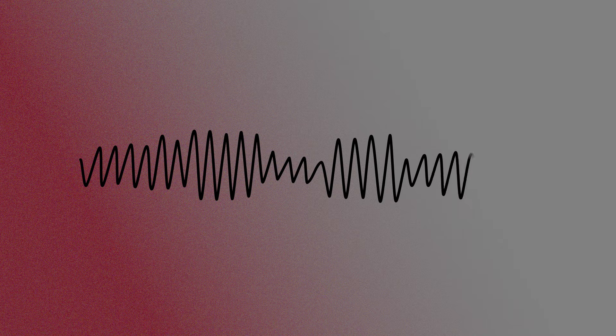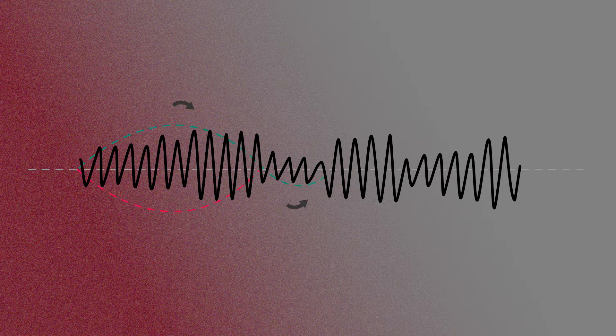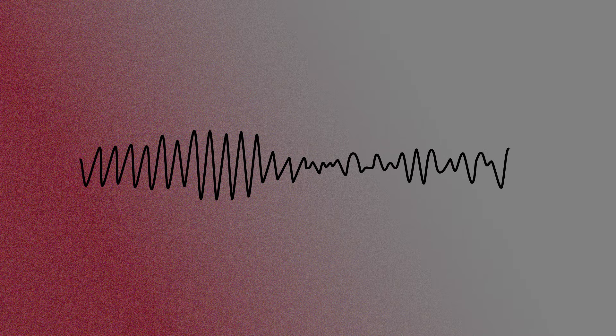Regardless of how this happens, the characteristic electrocardiographic finding you'll see is a ventricular dysrhythmia which appears to twist on an isoelectric line — hence the name torsade de pointe, or twisting of points. This can then evolve into ventricular fibrillation, which is a non-perfusing rhythm leading to cardiac arrest.